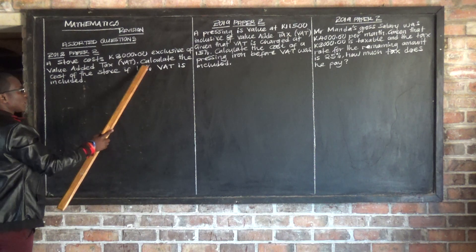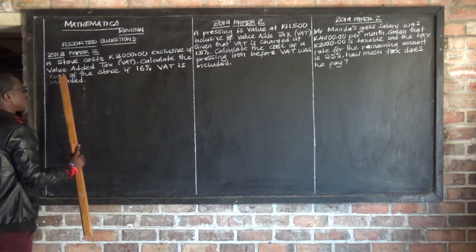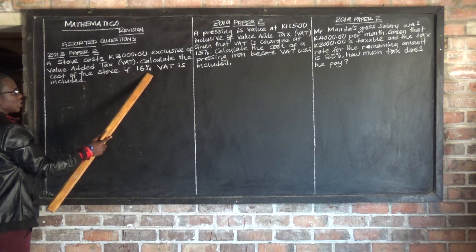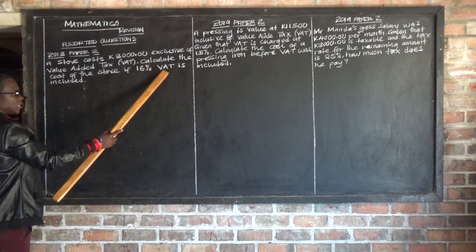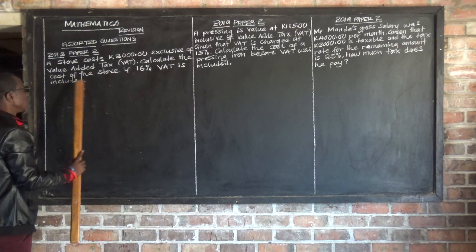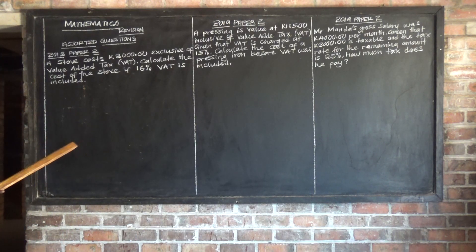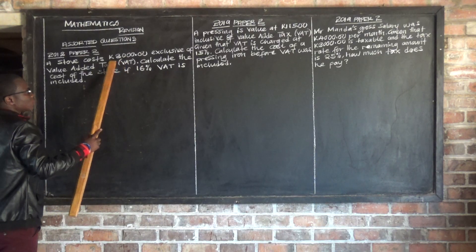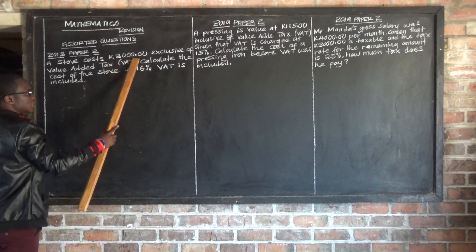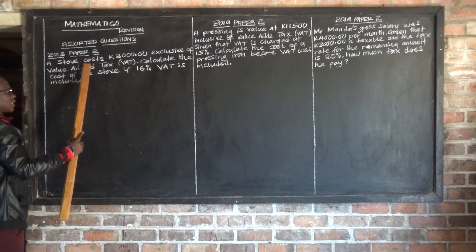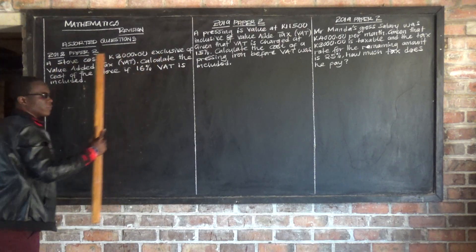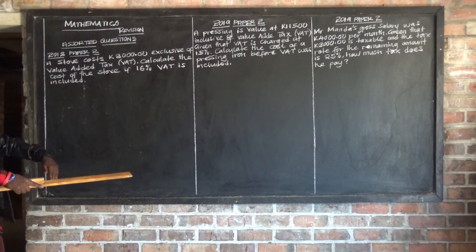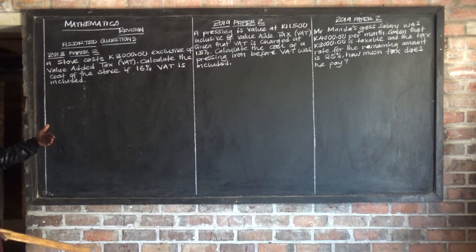The question says: calculate the cost of the stove if 16% VAT, which is value added tax, is included. Now we need to understand the meaning of the word 'exclusive.' Exclusive simply means not included.